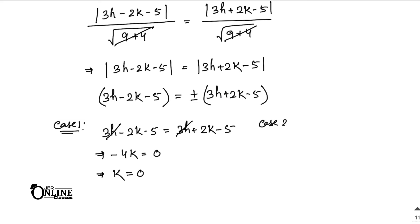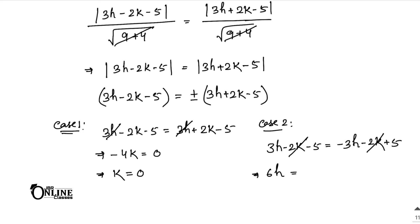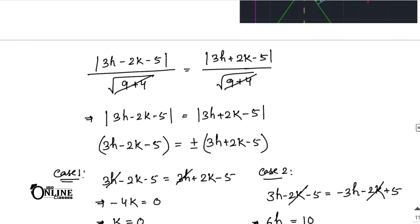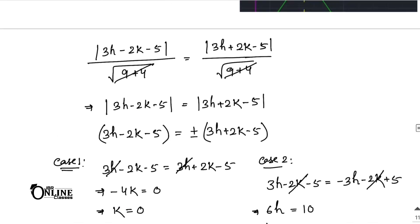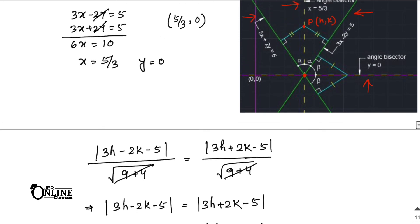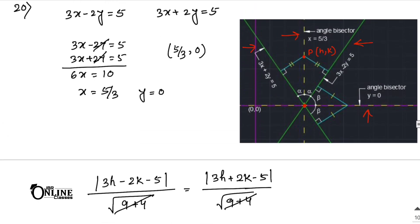Case 2 (negative): 3h minus 2k minus 5 = minus 3h minus 2k plus 5, so 6h = 10, giving h = 5/3. Therefore k = 0 represents the straight line y = 0, and h = 5/3 represents the straight line x = 5/3. The path of the moving point is a straight line as shown in the figure — proved.